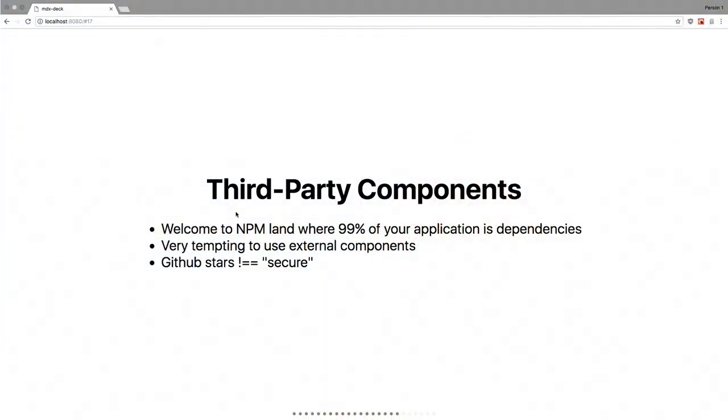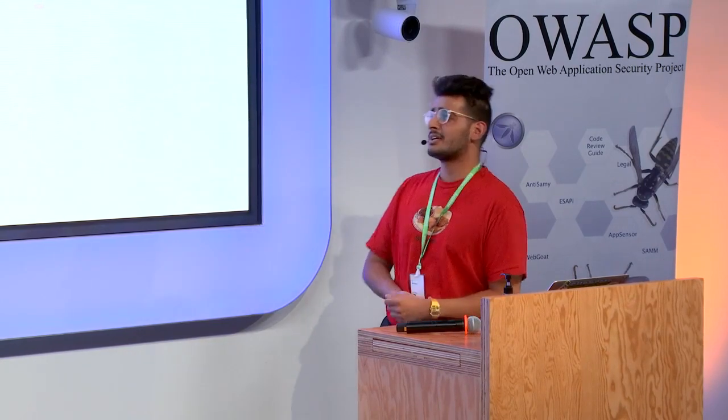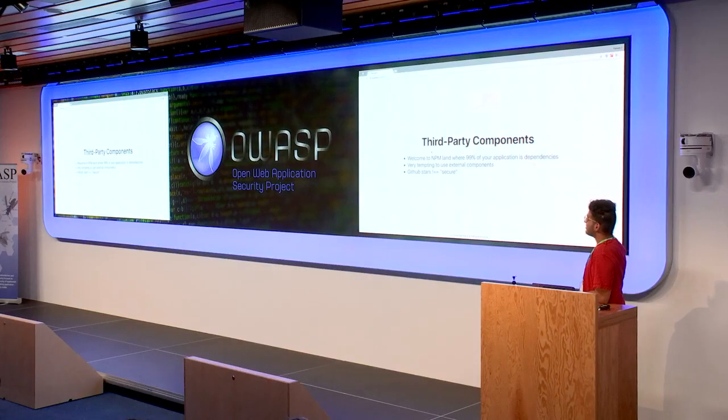Up ahead we have third-party components. You'll see a common thing in JavaScript applications where you want to build something — say you want a slider component — so you go search GitHub and find something with lots of stars, then download it and use it in your application. It is very tempting to use external components, and absolutely you should use them. But just be aware that GitHub stars don't equal secure. More often than not, especially with more complex components, there might be some DOM XSS or some sort of dangerous pattern hidden in there.